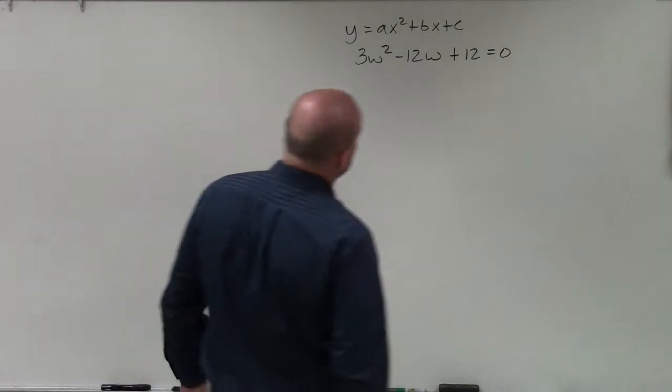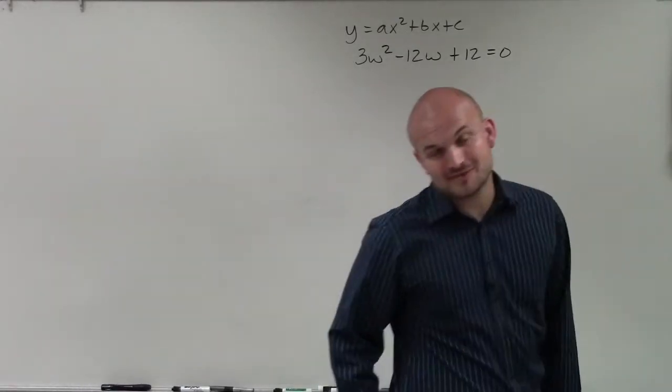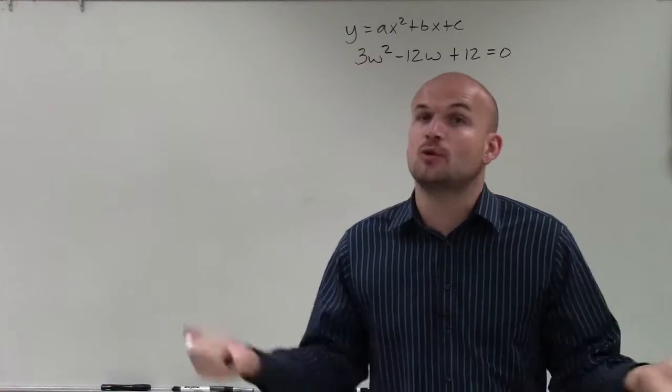Welcome. So what I have here is 3w² - 12w + 12 = 0. And what we're going to do is solve by applying the quadratic formula.